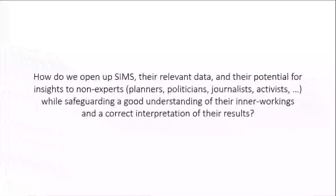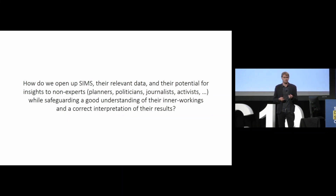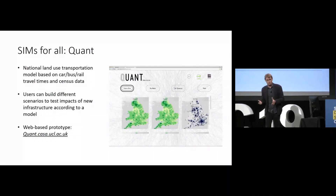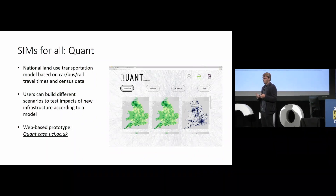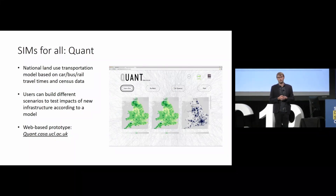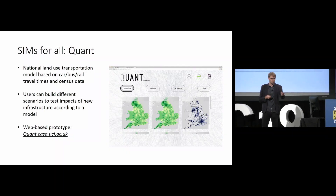A final point I'd like to raise — and this is some of the work we're doing at CASA at the moment — is that I think we could even open up spatial interaction models, combined with data and interpretation, to a much wider audience than just spatial data scientists and other researchers. This is essentially what we're trying to do in this project called Quant, which is a web-based service where we try to visualize the effect of large infrastructure works on the mobility of people based on predictions from models that we run on existing data. It's a web-based service, you can actually check it out — it's still in beta — but what is specific about it is that we try to uncover the entire complexity of these models, showing both the user decisions, the input data, and the interpretation that people could make of it.